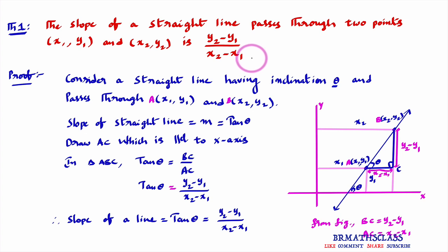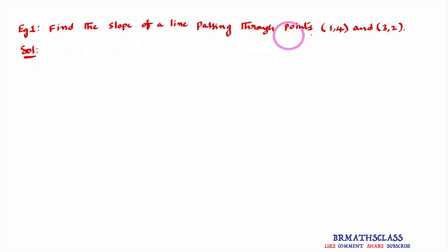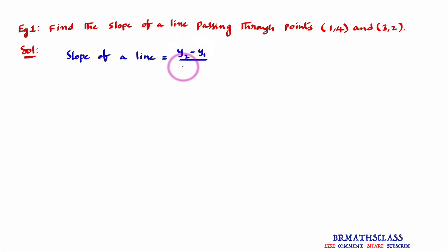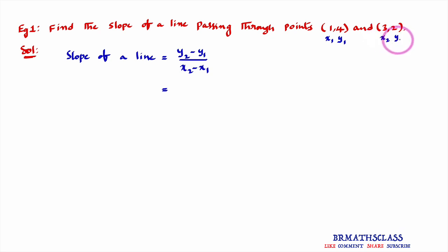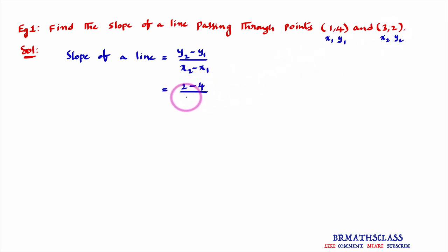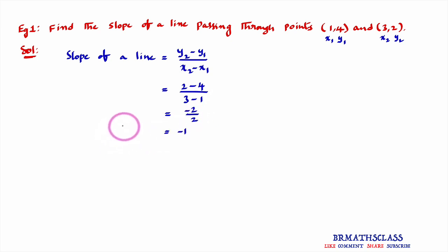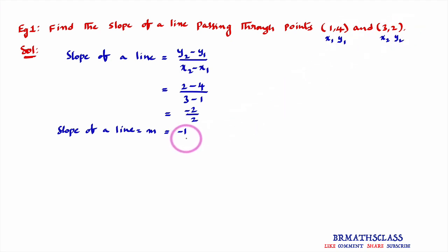We will understand these things with two examples. Example 1: find the slope of a line passing through points (1, 4) and (3, 2). The formula is y2 minus y1 divided by x2 minus x1. Taking x1=1, y1=4, x2=3, y2=2, we get 2 minus 4 divided by 3 minus 1, which is minus 2 divided by 2, equal to minus 1. So the slope of the straight line passing through (1, 4) and (3, 2) is minus 1.